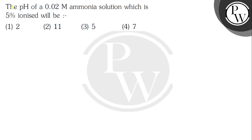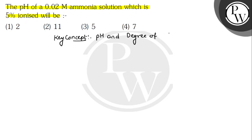Hello Achyot. The equation says: the pH of a 0.02N ammonia solution which is 5% ionized will be. Our options are 2, 11, 5, and 7. So the key concept here is pH and degree of dissociation.